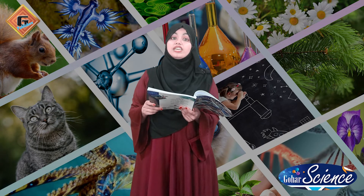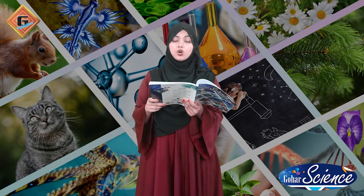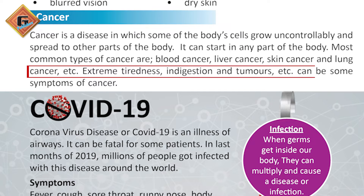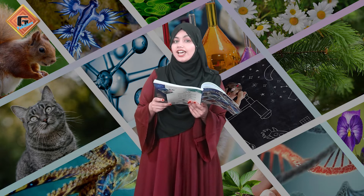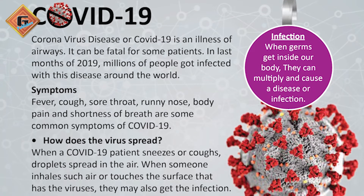My sister also had cancer. A tumor grew in her tongue — it was a harmful growth of cells that became a tumor. So I know how difficult it is to fight cancer. In cancer, cells grow into tumors, and these are the cancer symptoms. If someone has cancer, you have to support them and encourage them to fight it, because it is a very dangerous disease.